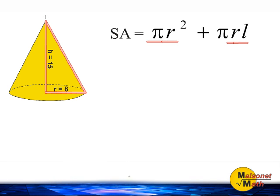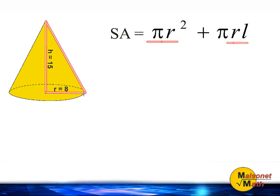Notice that the height of our cone, the radius of our circle, and the length of the slant height form a right triangle. And we know that when we know two sides of a right triangle, we can use the Pythagorean Theorem to calculate the length of the third side.